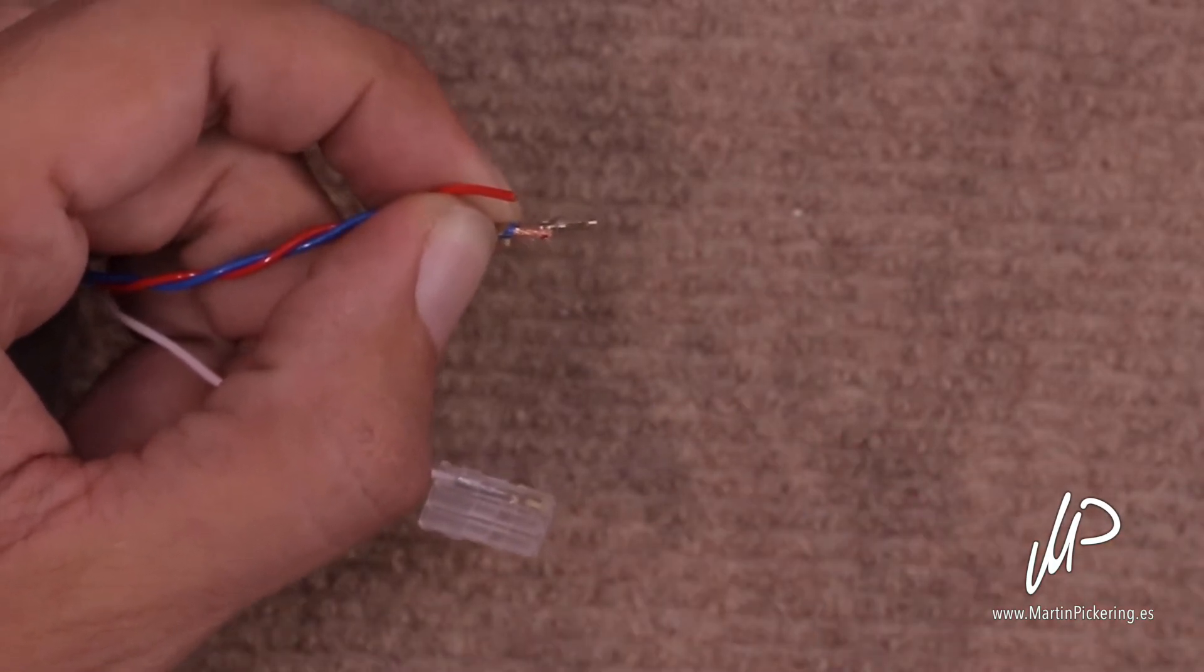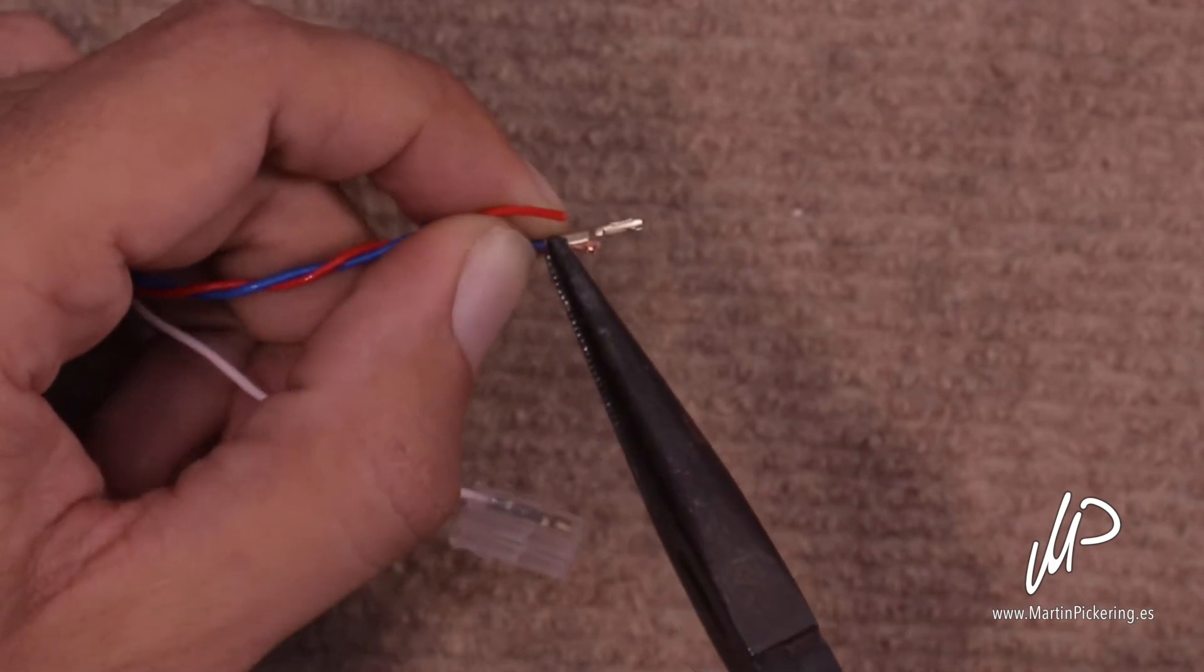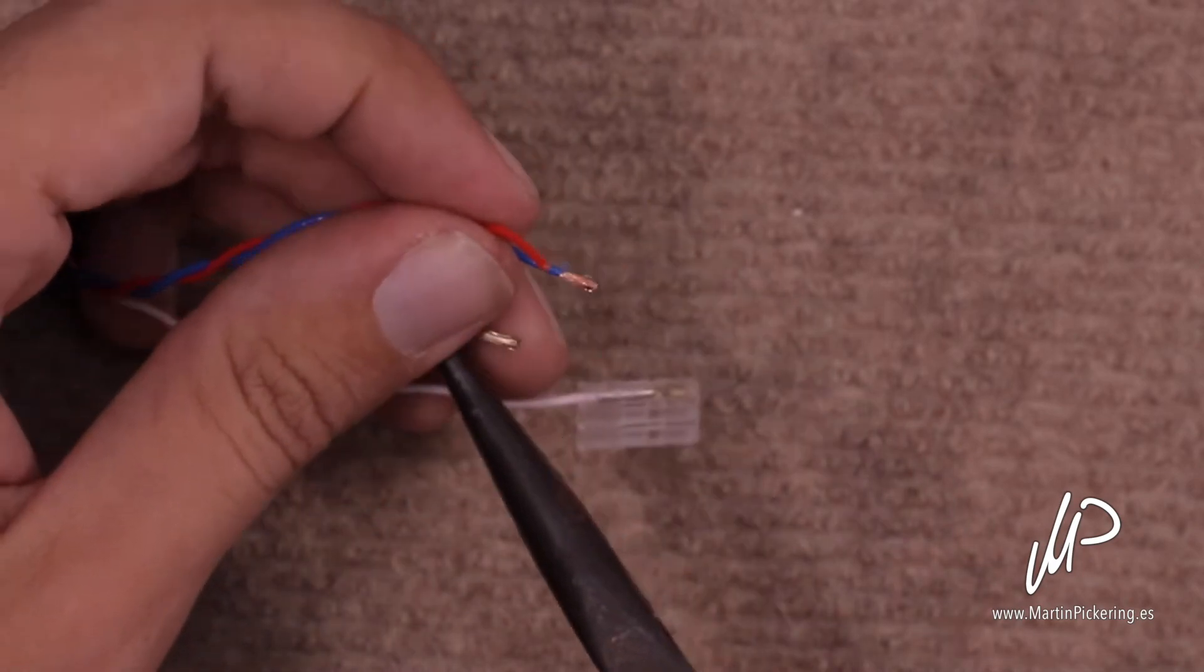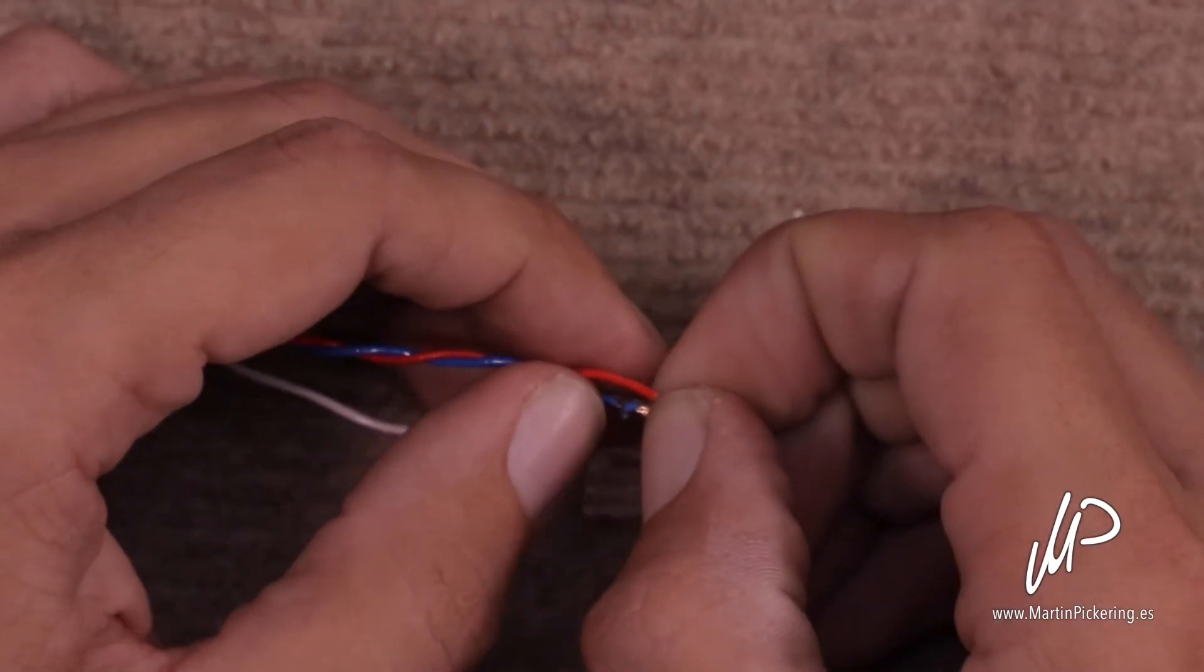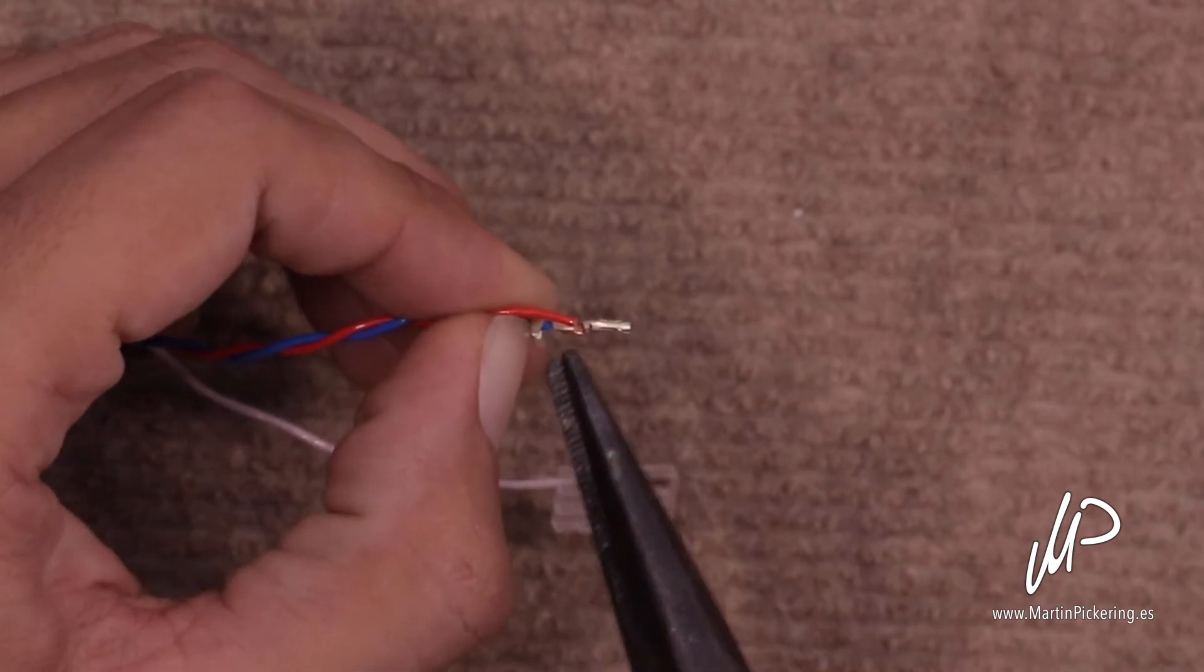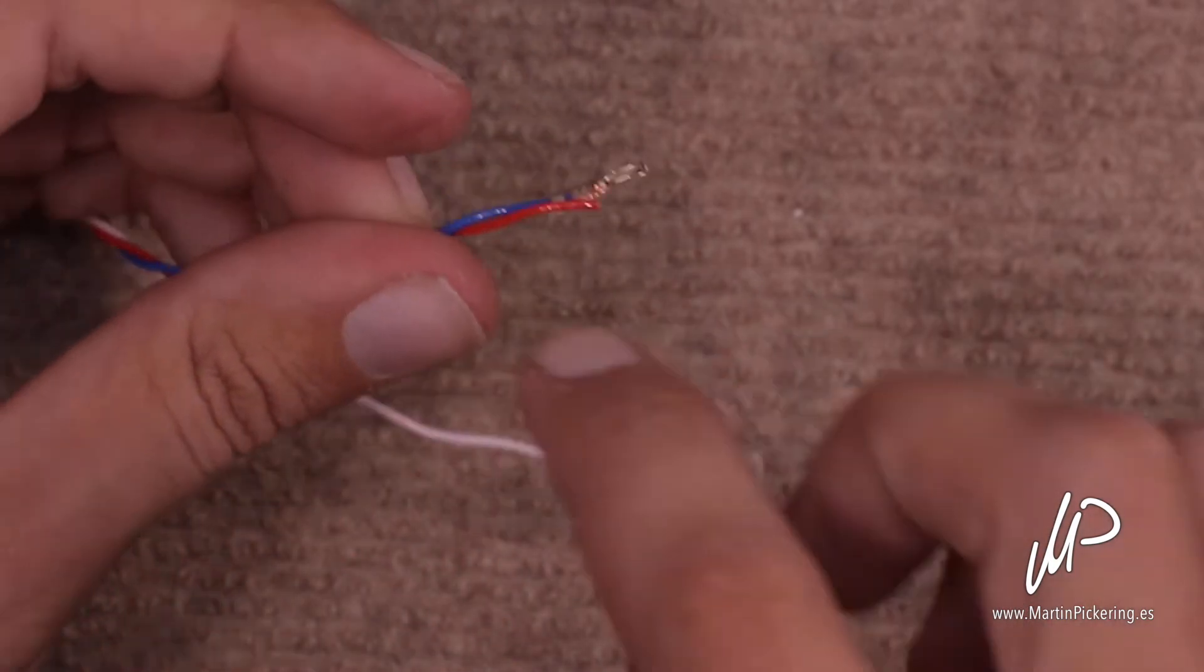Now I always close these down with some normal pliers first, just to hold it in place. Put that back on there, just close it down a little bit to make it easier in a moment when we actually start crimping.